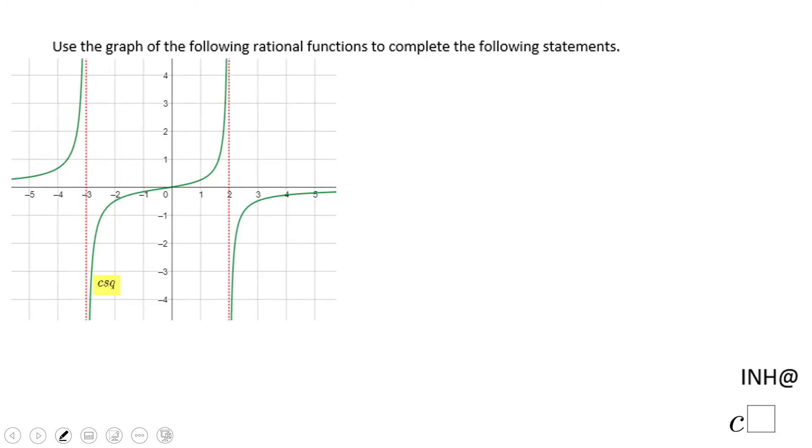In this example, we have a rational function, a graph of a rational function, and we need to complete this statement, which means x approach to two negative.